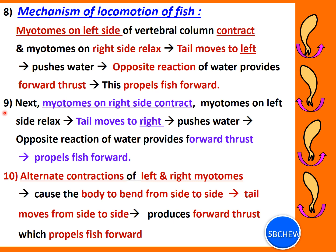Next, myotomes on the right side contract while myotomes on the left relax, causing the tail to move to the right. The tail pushes on the water again, producing an opposite reaction and forward thrust to propel the fish forward. Thus, alternate contractions of the left and right myotomes cause the body to bend from side to side — the tail moves left and right — producing forward thrusts that propel the fish forward.